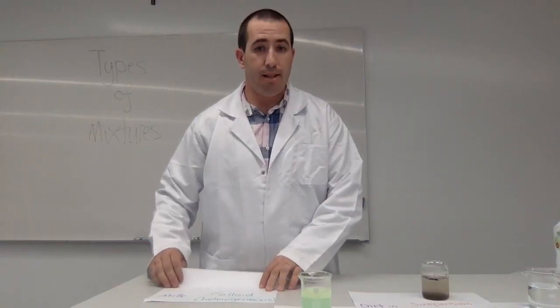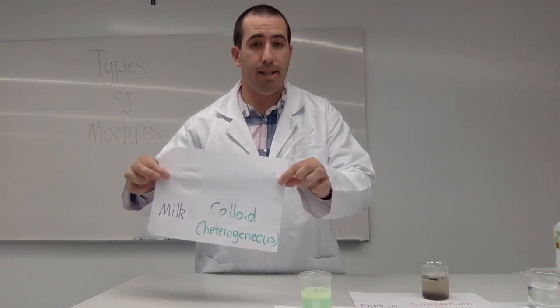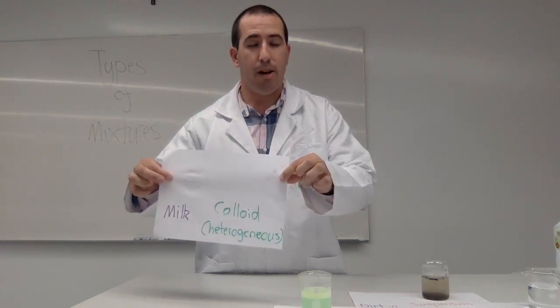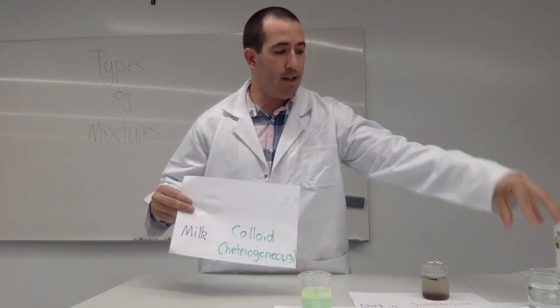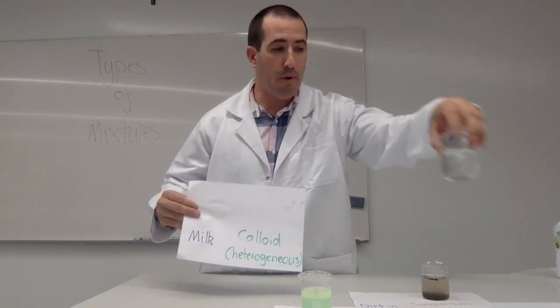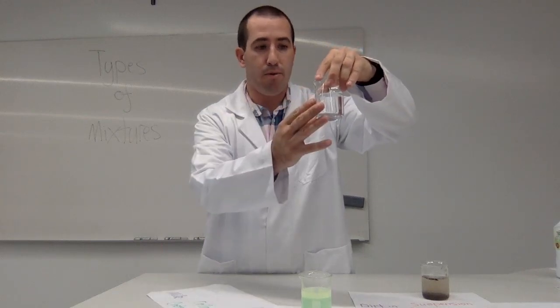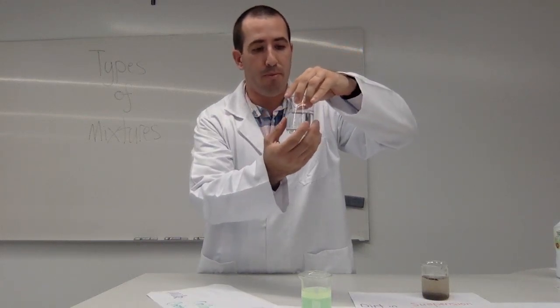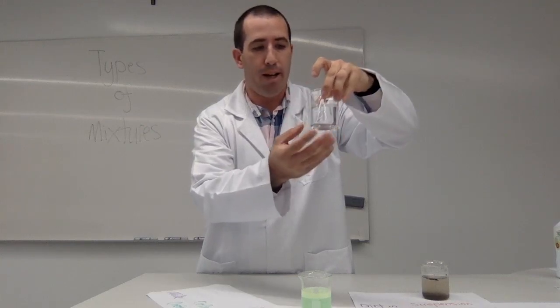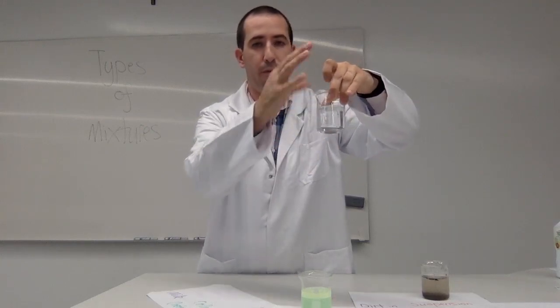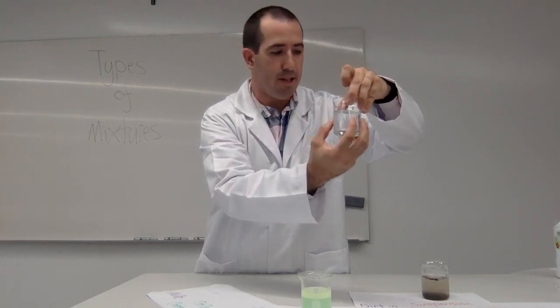And now our last mixture we're going to look at is a colloid. Now a colloid is slightly different from all the others. So just going back over this again. A solution is made up of dissolved particles. So for example, here's sugar molecules dissolved in the liquid water. You cannot see them. It's uniform around. Hence, it's a homogeneous mixture.